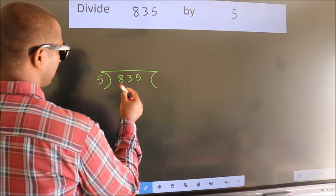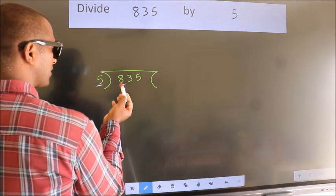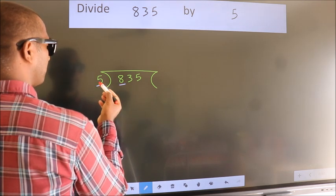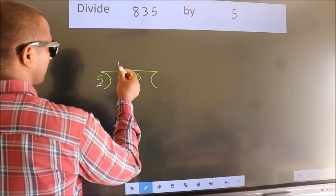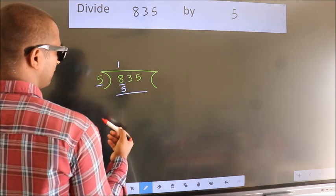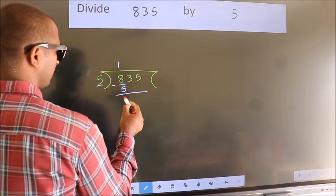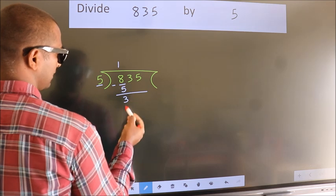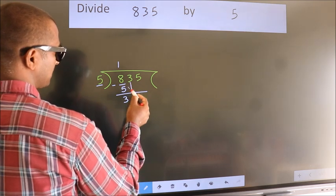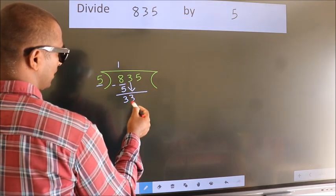Here we have 8, here 5. A number close to 8 in the 5 table is 5 once = 5. Now we should subtract. We get 3. After this, bring down the beside number. So 3 down.